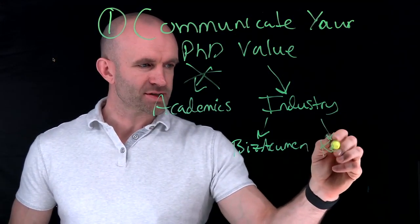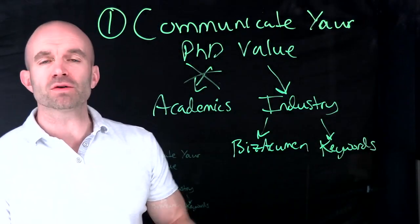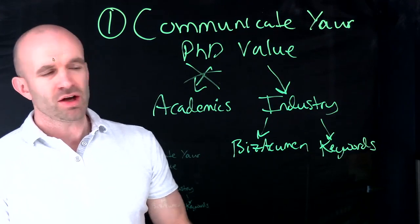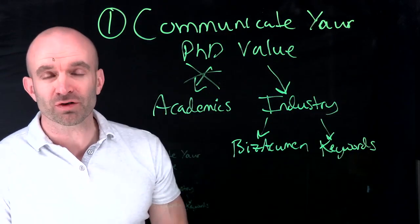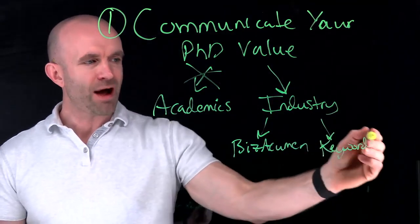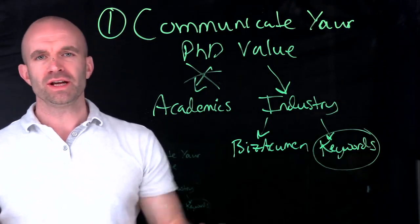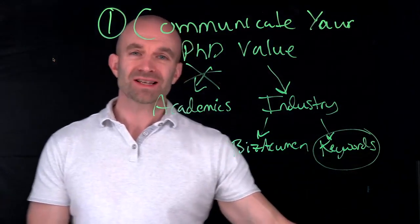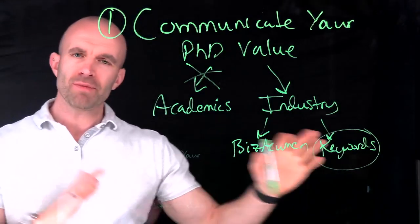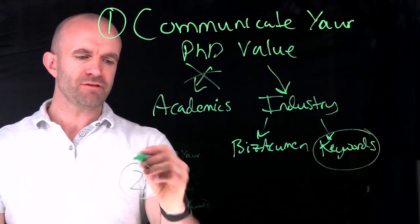Secondly, the keywords. Again, that language of industry. Where are you going to find these keywords? On the job postings. You have to understand this at a very high level. You should be using 30 to 50 keywords from the job posting on your resume. We're going to talk about how to master this, how to pivot your PhD value to the industry jobs that you want. Maybe you don't know which industry job you want. That's okay. We're going to help you overcome that analysis paralysis to actually decide on what career is right for you.